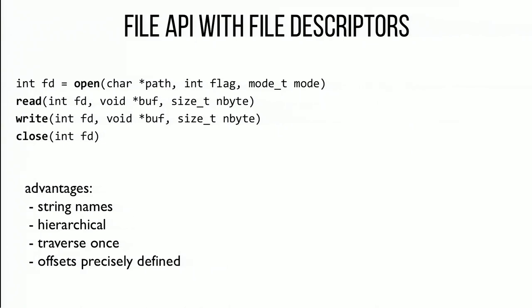We argued that a nice interface for users is to specify a path for a particular file. You open up a file that corresponds to that path and return a file descriptor to the user process. In future operations, they can use that file descriptor as the way of performing reads and writes. It's going to be relatively expensive to open a file because you have to traverse this path, look at all the inodes, read all the directories, and find all the correct directory entries.